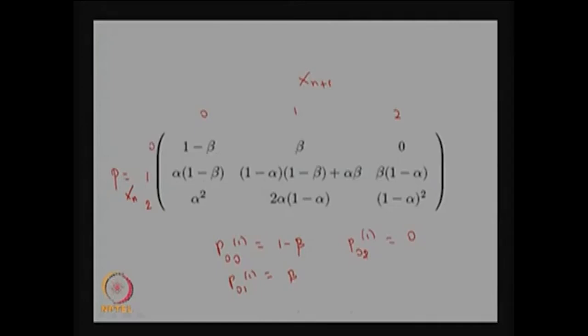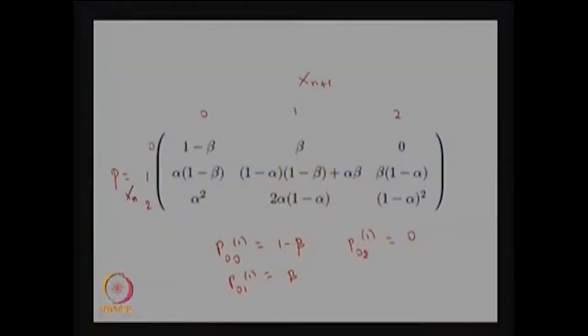Similarly, P(2,0) corresponds to the system going from 2 working machines to 0 — meaning both machines failed on the same day. Therefore that probability is alpha times alpha, which equals alpha squared. You can visualize the other matrix elements in the same way.